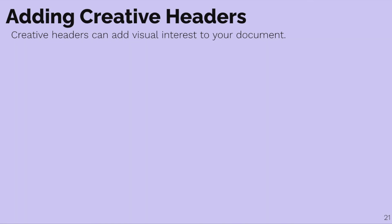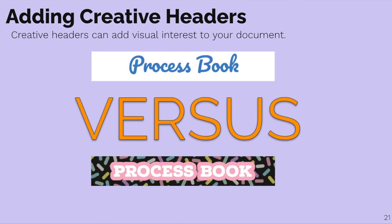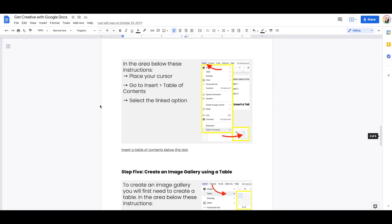You can also add creative headers to add visual interest to your document. Look at the difference — 'process book' versus 'process book.' They have two different styles but are both a bit more jazzy than using regular text. There are a couple of different ways you can add creative headers, which I go over at the bottom of the practice document.